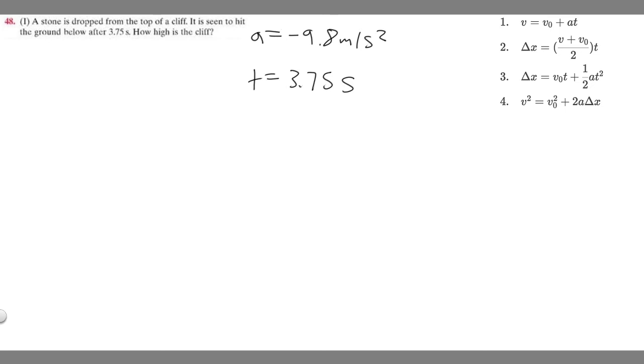And then what you're also going to want to do is v sub zero, which is your initial velocity. Since we're dropping something, right when it starts it doesn't have any velocity because the velocity is going to increase with the acceleration. Right when it starts it's zero, so v sub zero is going to be zero meters per second.